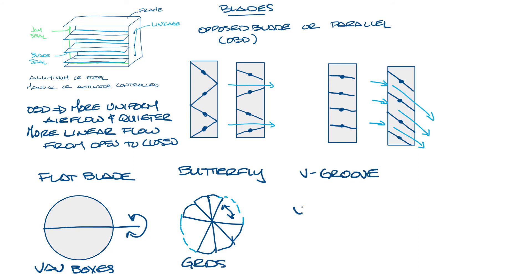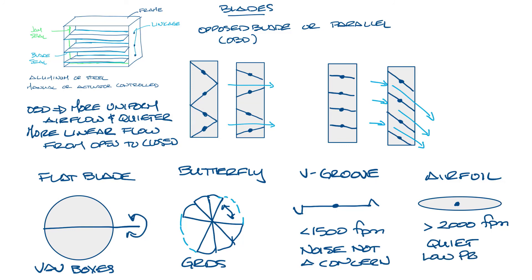There are also V-groove blades that look like this. These are good for velocities less than 1500 feet per minute and where noise is not a factor in the application. If your application is going to see higher velocities or is sound sensitive, you can get dampers with an airfoil blade. Airfoil blades look like this. These blades can have velocities over 2000 feet per minute and are often used when noise is a concern. Airfoil blades have the lowest pressure drop and are typically stronger than other shapes.